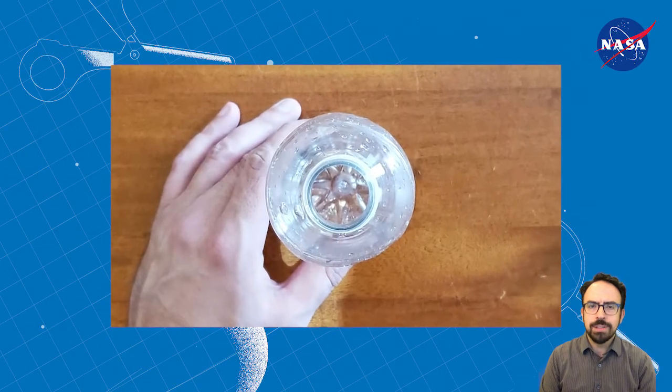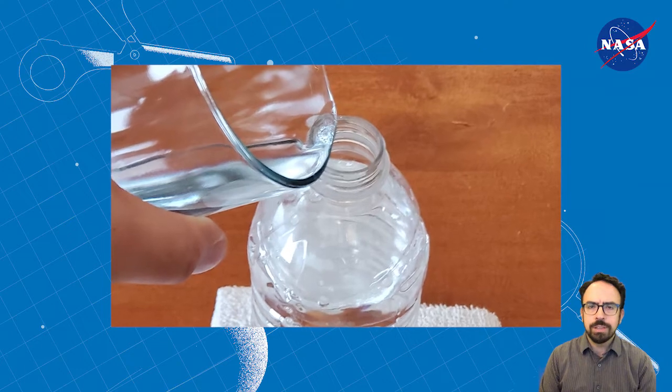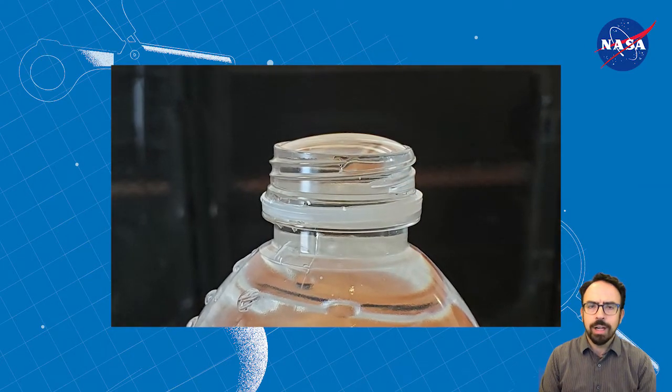The first thing you'll need to do is fill the water bottle to the rim with water. You can add a few drops of food coloring to make the water more visible, but it's not required.